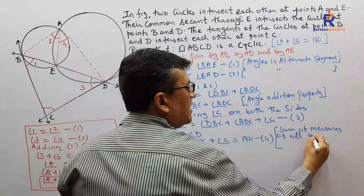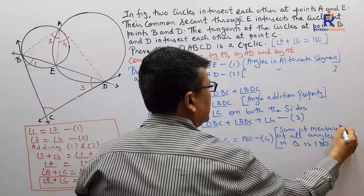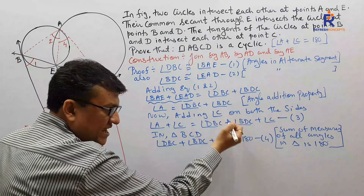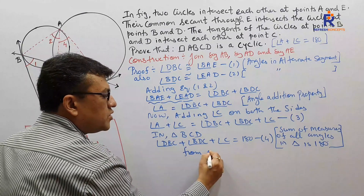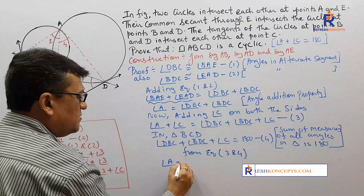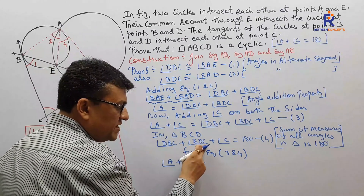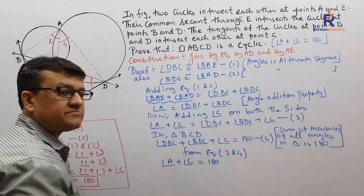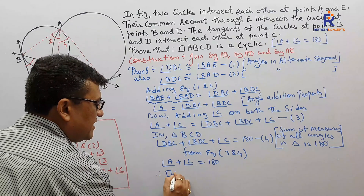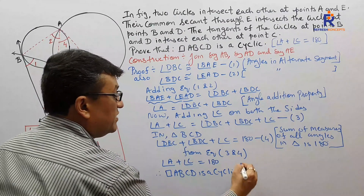In triangle BCD: angle DBC plus angle BDC plus angle C equals 180 — equation 4. Reason: sum of measures of all angles in a triangle is 180 degrees. So from equation 3 and equation 4, the LHS is angle A plus angle C. The RHS is angle DBC plus angle BDC plus angle C, and we know that equals 180. Therefore I can say angle A plus angle C equals 180.